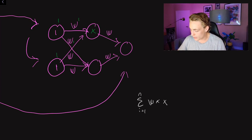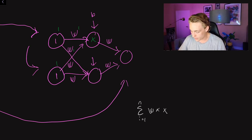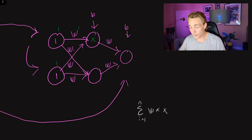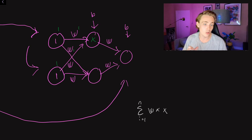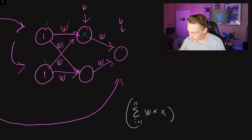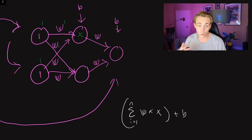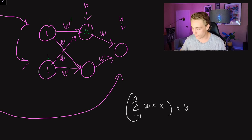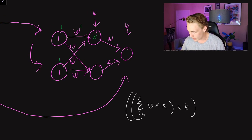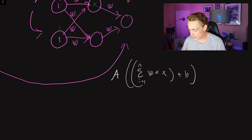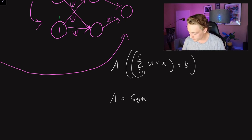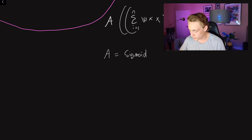We can add a bias for the hidden layer and also for the output layer, but we're not going to do that in this video to keep things simple. We just want to learn the XOR function using only the weights as trainable parameters. If we had the bias, we'd add it after summing all the weights multiplied with our inputs, then pass everything through the activation function.